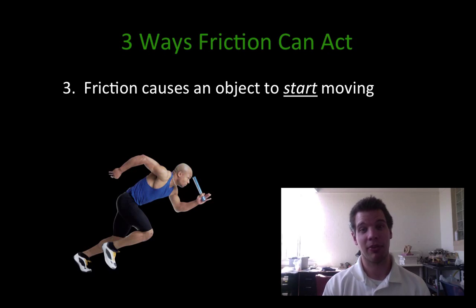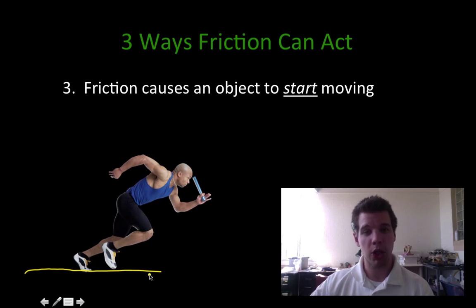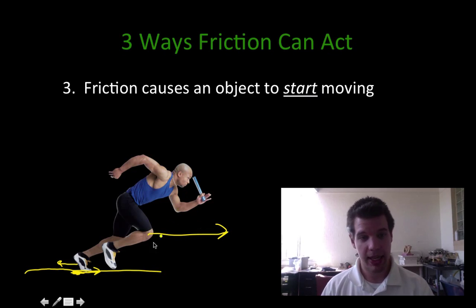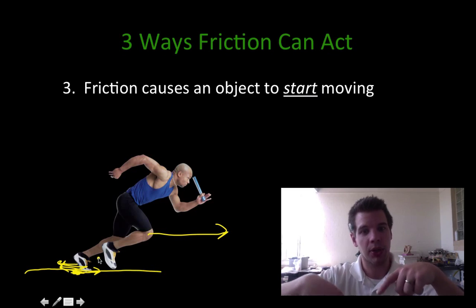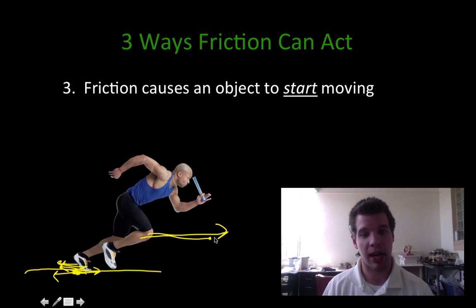The last case is that special one where friction actually causes the object to start moving. One of the best ways to illustrate this is a runner. He's in contact with the ground and just trying to get started in his race. He pushes his foot down on the ground really hard, and friction is actually working to oppose that motion, so it pushes him forward and he starts racing. Without friction, his foot would just slide across the ground — like the cartoons where feet keep spinning. With friction, it drives his body forward and actually starts the motion.